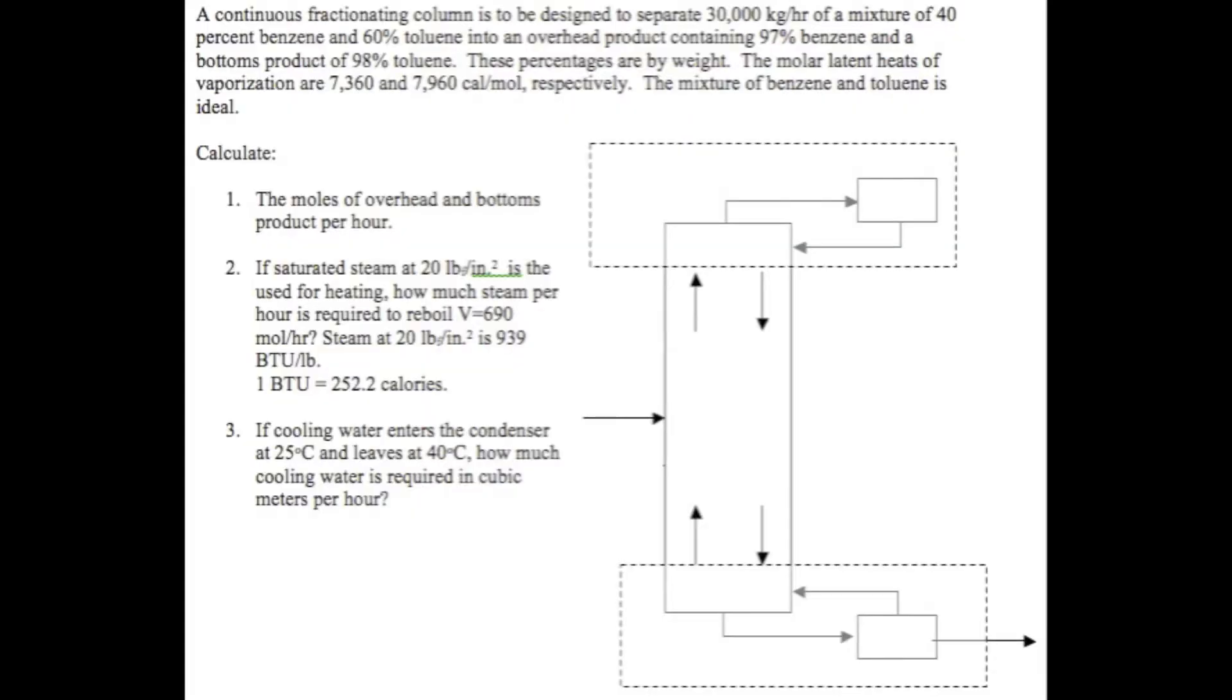A continuous fractionating column is to be designed to separate 30,000 kg per hour of a mixture of 40% benzene and 60% toluene into an overhead product containing 97% benzene and a bottoms product of 98% toluene. These percentages are by weight. The molar latent heats of vaporization are 7,360 and 7,960 calories per mole respectively. The mixture of benzene and toluene is ideal. For number one, we will calculate the moles of overhead and bottoms product per hour.